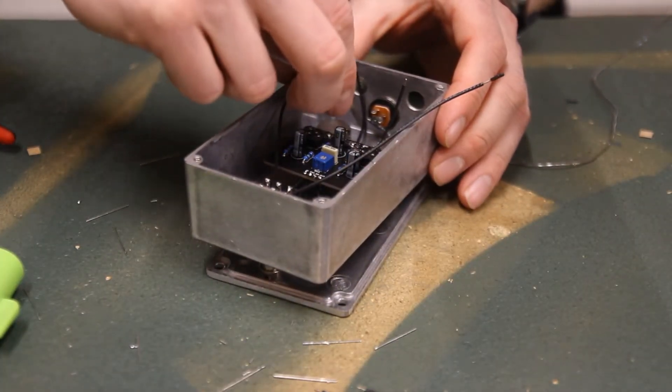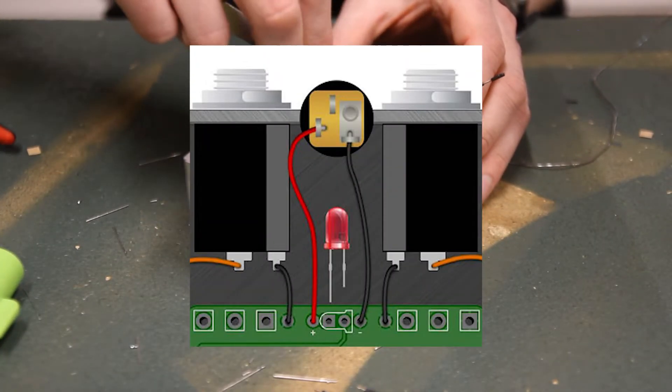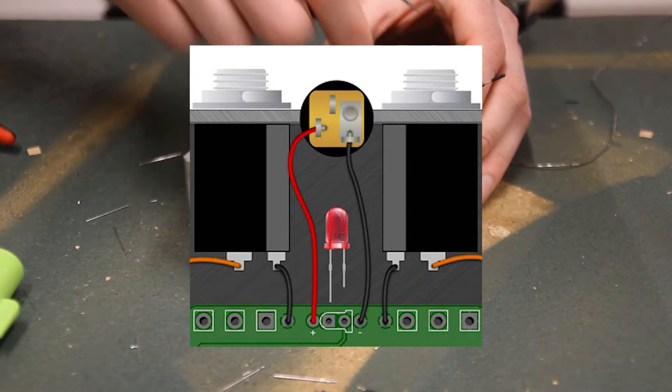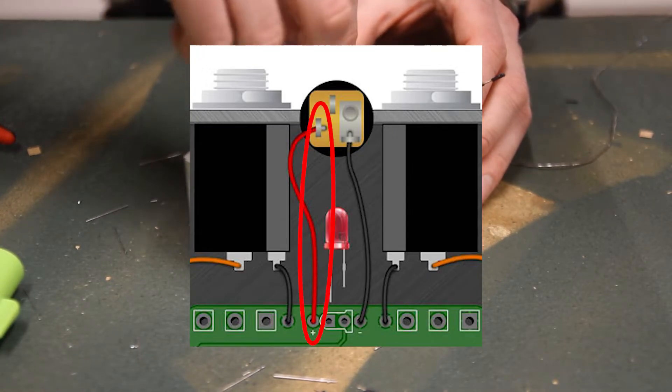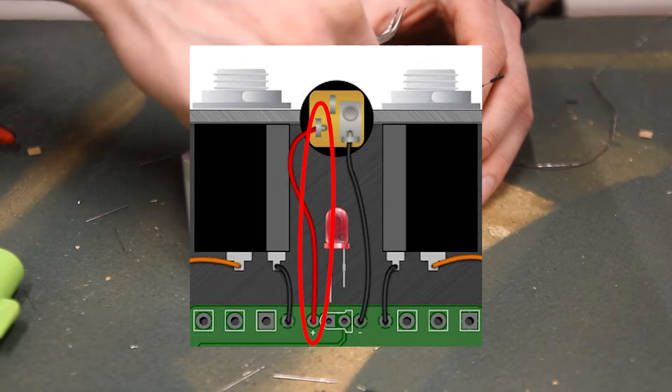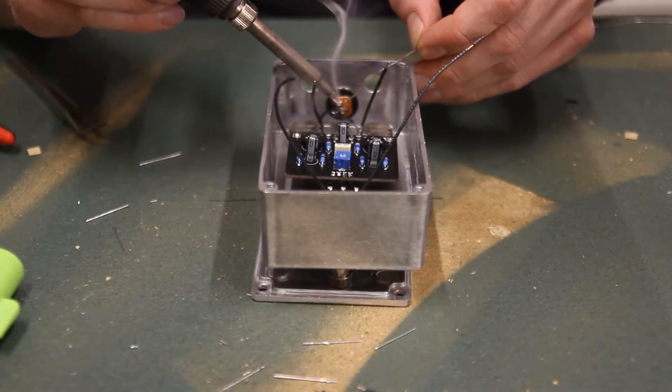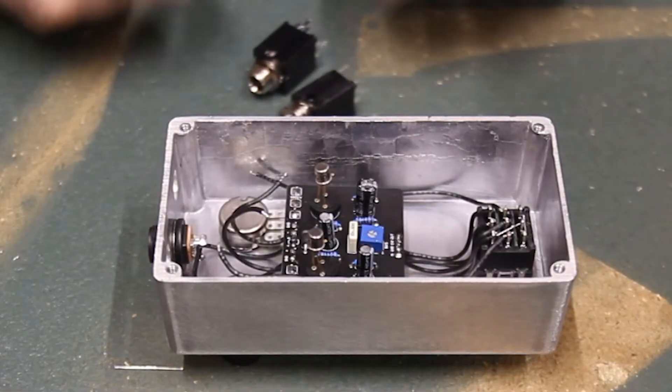Now do the same thing with the positive or plus power wire. Take this wire going from the plus pad and poke it into this lug on the jack in the diagram. Solder it in.